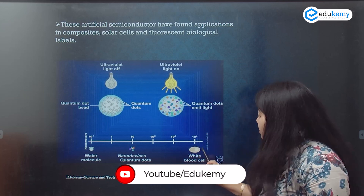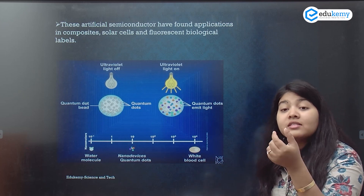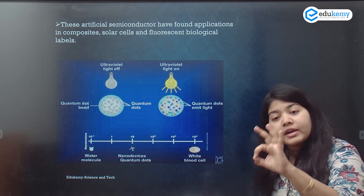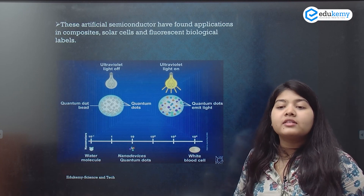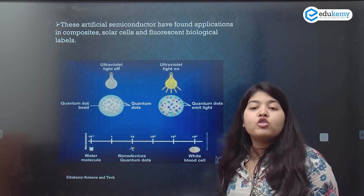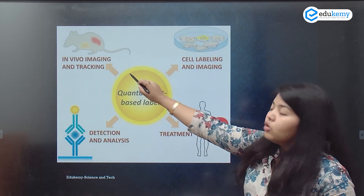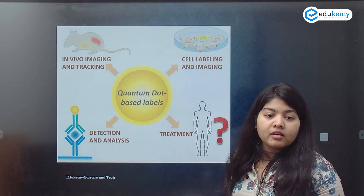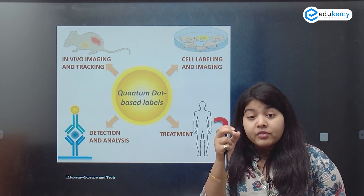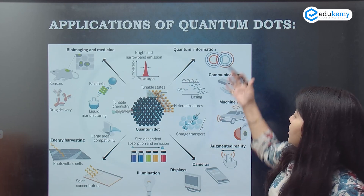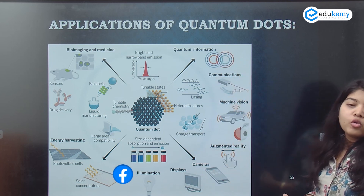This will help in identifying, for example, cancerous cells for targeted drug delivery in cancer treatment. If I want to use it in the solar panel, if I want to do in vivo imaging and tracking, some sort of detection and analysis where I need specific highlighting — these are the different applications of quantum dots.